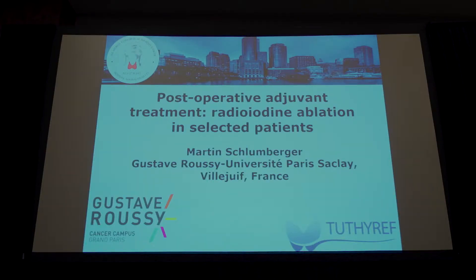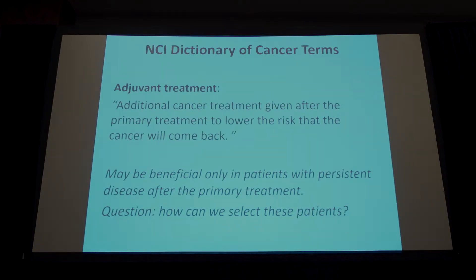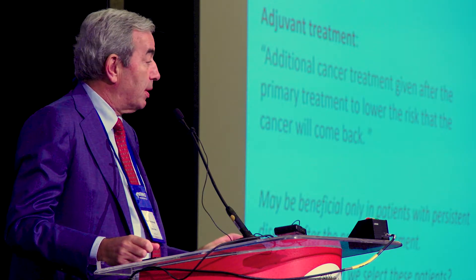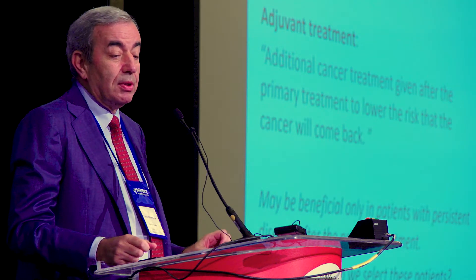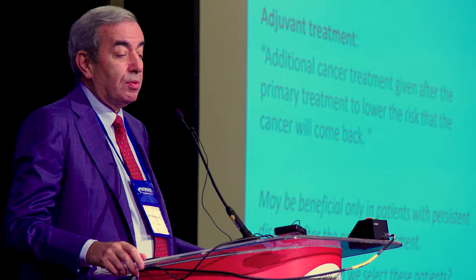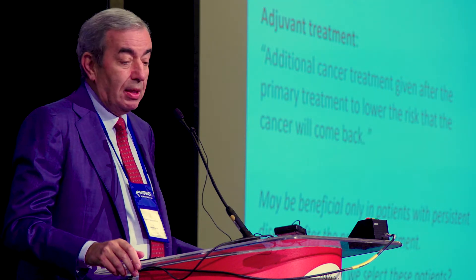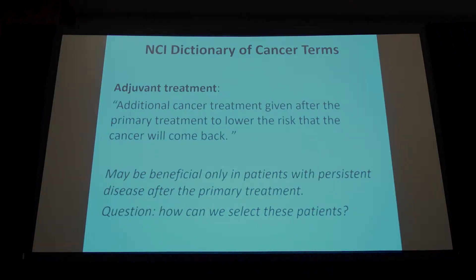I went to the NCI dictionary of cancer terms to find the definition of adjuvant treatment, which is not so clear for everybody. Adjuvant treatment is additional cancer treatment given after the primary treatment to lower the risk that the cancer will come back. So we exclude patients with obvious structural disease from this definition because these patients need treatment — but to decrease the risk of recurrence, this may be beneficial only in patients with remote persistent disease after primary treatment.